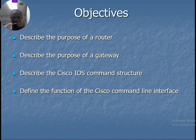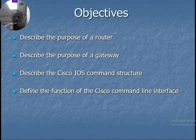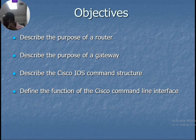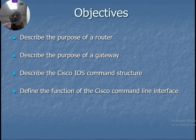The first objective of this chapter is to describe the purpose of a router — why do we need a router in a network, why do we use a router, and can we connect a network without a router? That's the first thing we're going to find out.